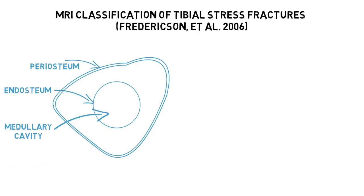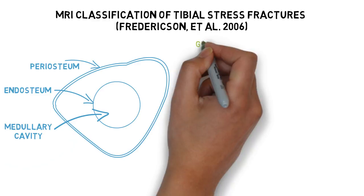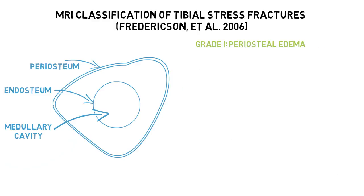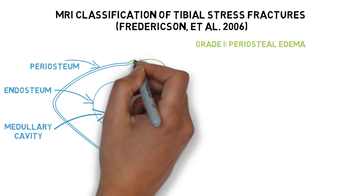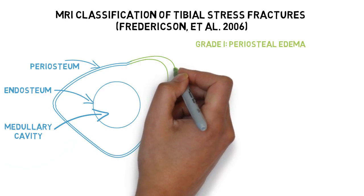Fredrickson describes 4 grades of stress fracture. Grade 1 describes where there is edema or swelling to the outer periosteal layer.